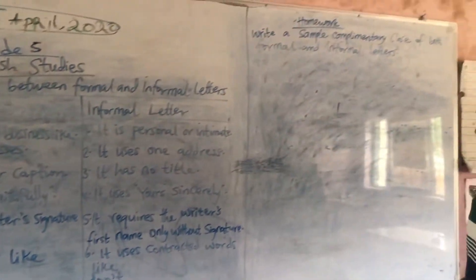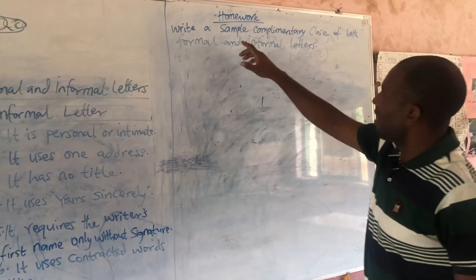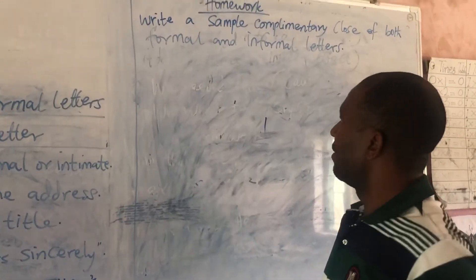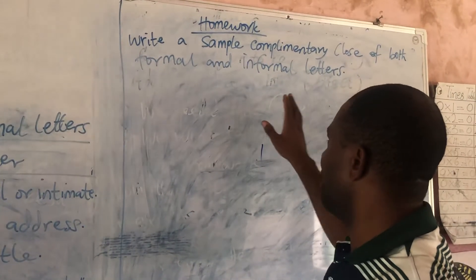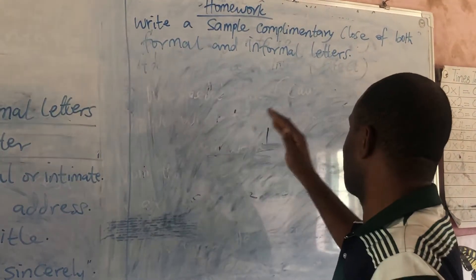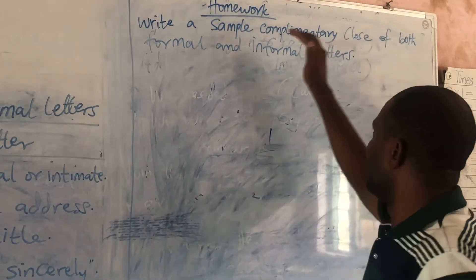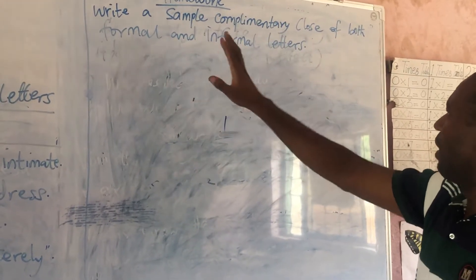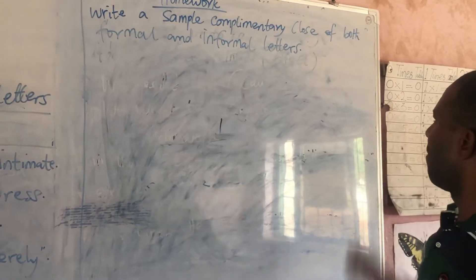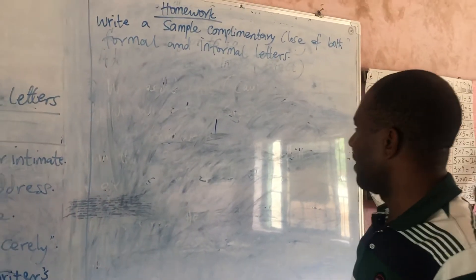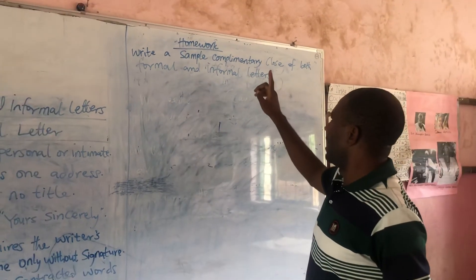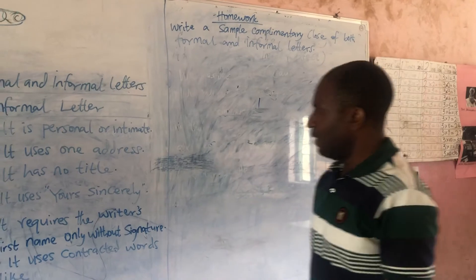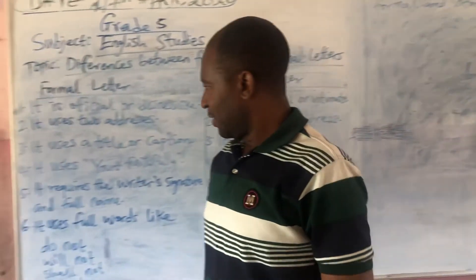Now your homework: you are expected to write example complementary closes — otherwise known as subscriptions — of both formal and informal letters. Write the complementary close of a formal letter and, thereafter, the complementary close of an informal letter. The two should be written side by side. Let's call it a day.